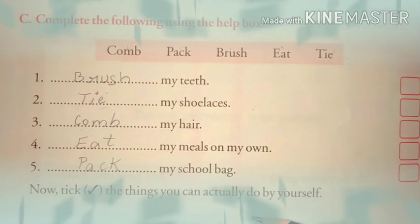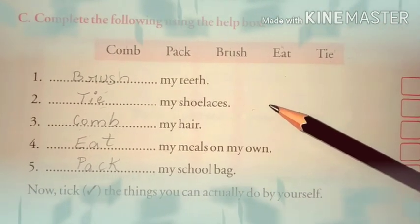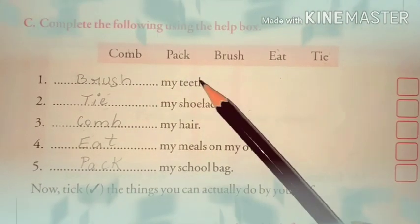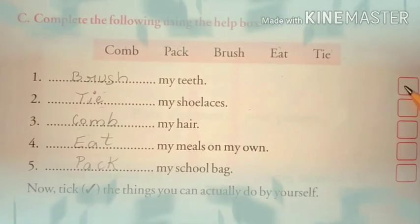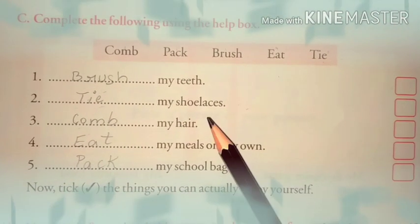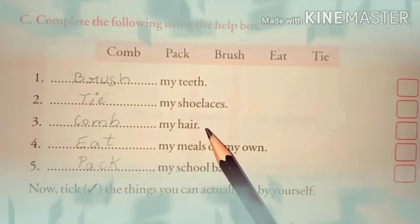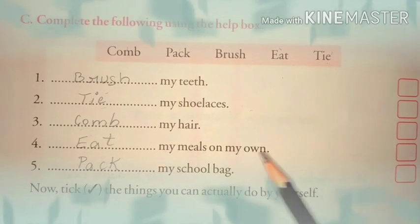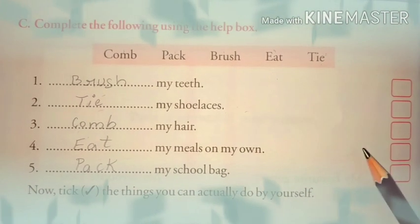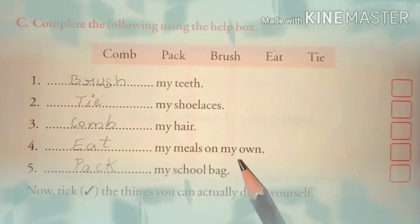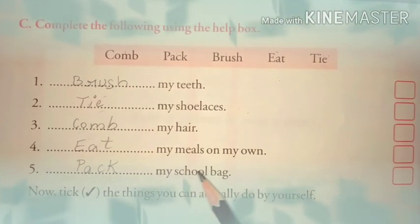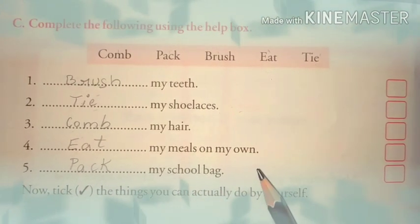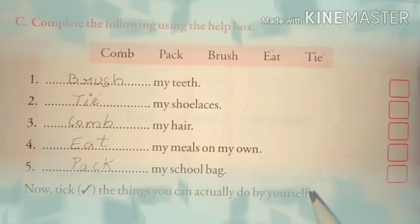جو آپ خود سے کر سکتے ہیں، بنا کسی کے help سے، بنا اپنے parents یا siblings کے help سے، جو آپ کام خود سے کرتے ہیں۔ Like brush my teeth — اگر آپ خود سے brush کر لیتے ہو تو وہاں پہ آپ tick کرنا۔ Second, tie my shoelaces — اگر آپ خود سے shoelaces tie کر لیتے ہو تو tick کرنا۔ Comb my hair — اگر آپ خود سے اپنے hair کو comb کر لیتے ہیں تو tick کریں۔ Fourth, eat my meals on my own — اگر آپ خود سے کھانا کھا لیتے ہیں تو tick کریں، اگر نہیں تو tick نہیں کرنا۔ Five, pack my school bag — اگر آپ خود سے اپنا school bag pack کر لیتے ہیں بغیر parents کی help کے تو tick کرنا، اگر نہیں کر پاتے تو tick مت کرنا۔